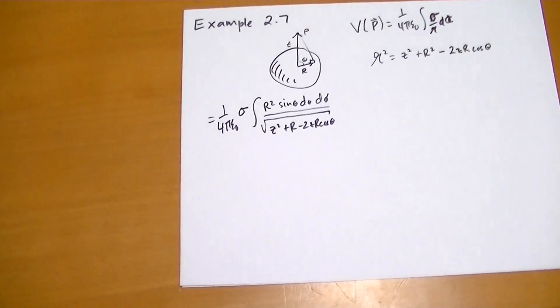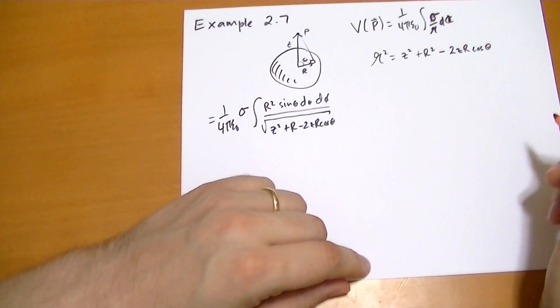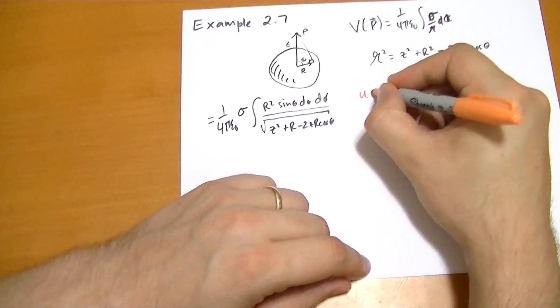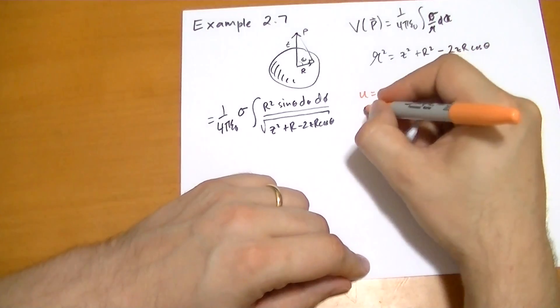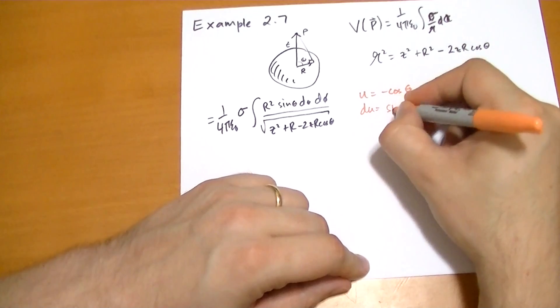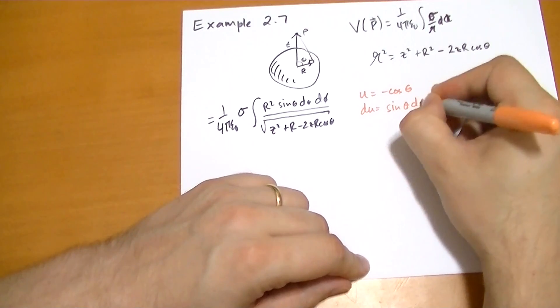Now, problem 2.7, you're going to recognize that denominator, how many times we solve this. If you haven't solved this integral before, if you substitute in u equals minus cos theta, then du becomes sin theta d theta.